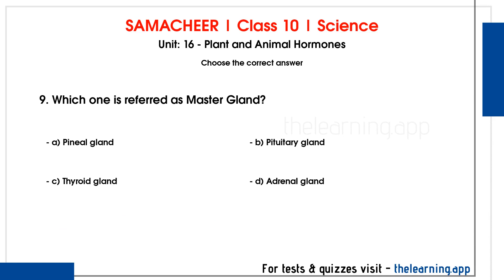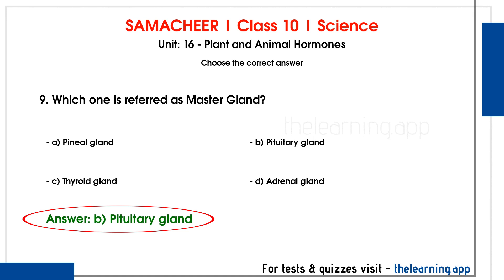Ninth question: Which one is referred to as master gland? Options are A) Pineal gland, B) Pituitary gland, C) Thyroid gland, D) Adrenal gland. Correct answer is option B, pituitary gland. The pituitary gland is the master gland because it controls the other parts of the endocrine system by secreting hormones that regulate other endocrine glands.